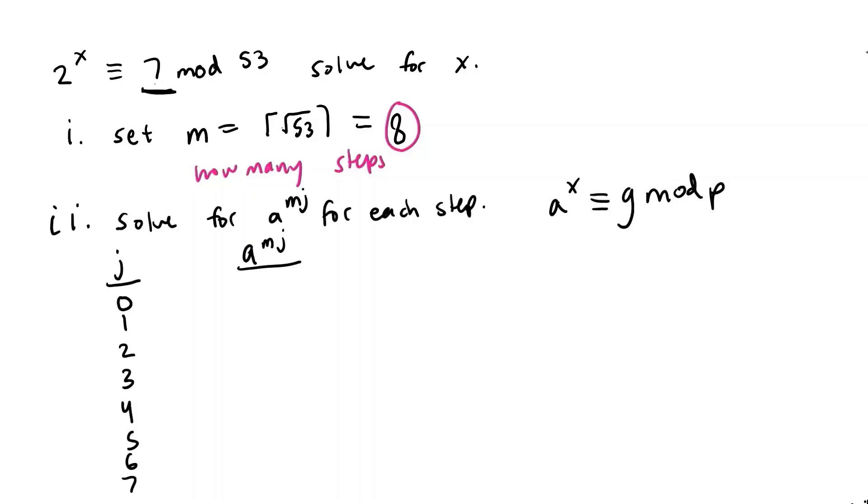So a in our case is 2 so we have 2 to the 8 times 0 and before we say that this is 1 because 2 to the 0 is 1 I want to note that a to the mj is equal to a to the mj mod p. This is very important since this result will give us the information that we need.